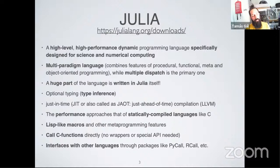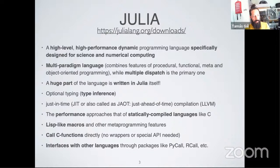You can call C functions directly with no wrappers or special API needed. Julia doesn't reinvent the wheel — BLAS, LAPACK, and MKL can be directly used for heavy number lifting. It also interfaces well with other languages through packages like PyCall and RCall to call Python or R methods.